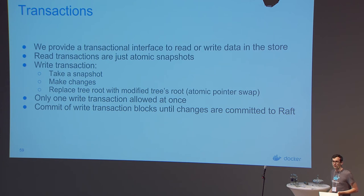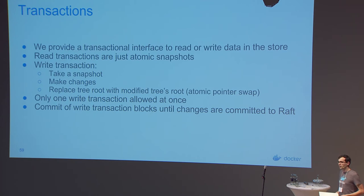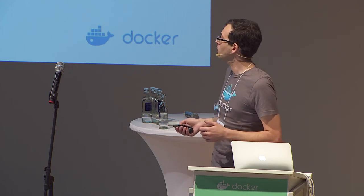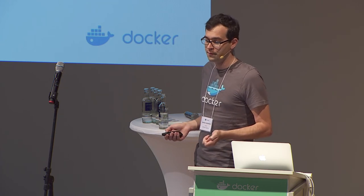These copy-on-write operations mean that if somebody was referencing the original tree, they would never see my changes. That's the basis we use to build transactions in the SwarmKit data store. We decided to make everything a transactional interface. For read transactions, you get a pointer to the root of the tree — since nobody's modifying things pointed to by that, you have a consistent view. For write transactions, you take a snapshot, make changes with copy-on-write, then commit by replacing the root — just an atomic pointer swap with no locking involved.